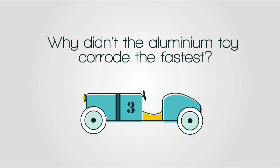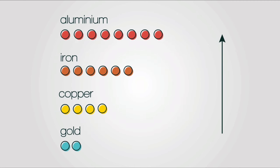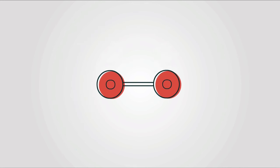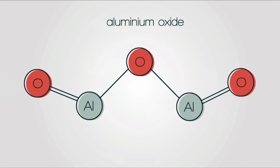why didn't the aluminium toy corrode the fastest? The truth is, aluminium is more reactive than iron, so it reacts fastest with oxygen from the air, forming aluminium oxide.